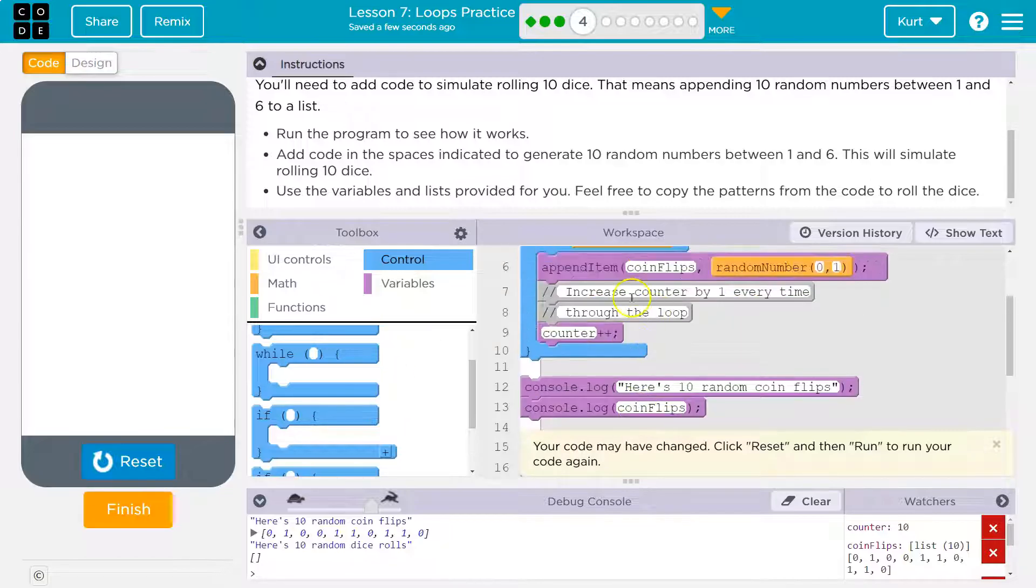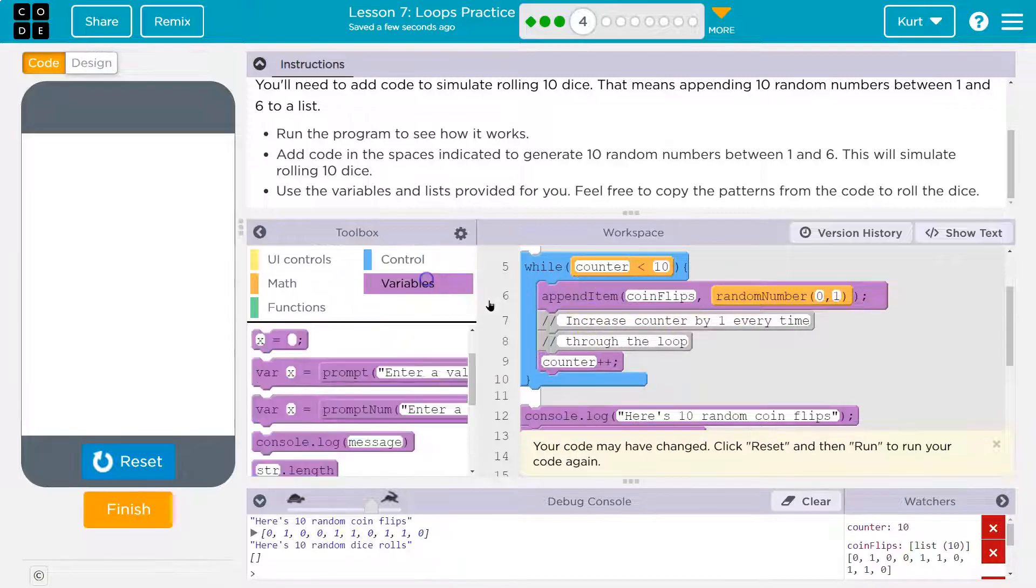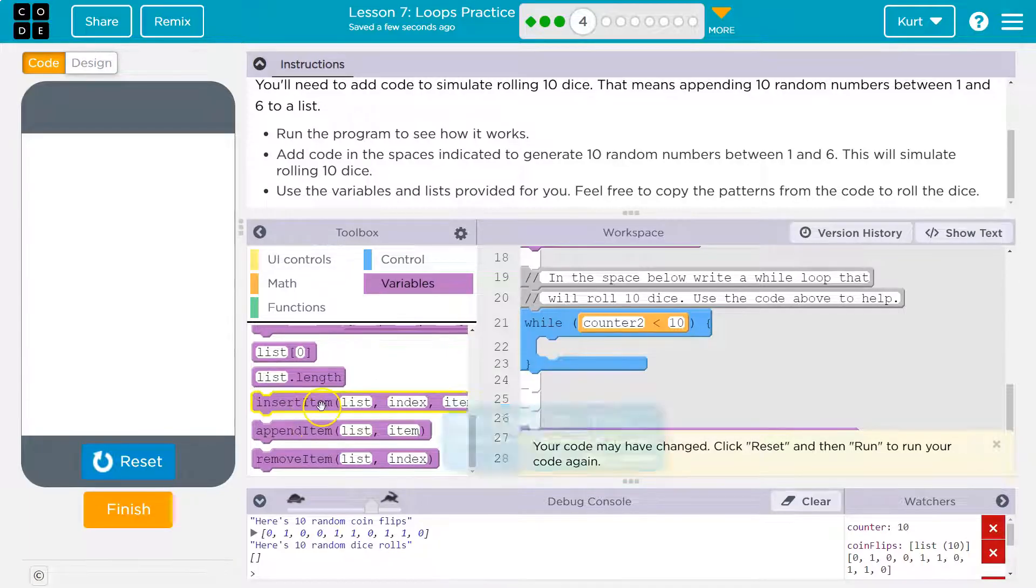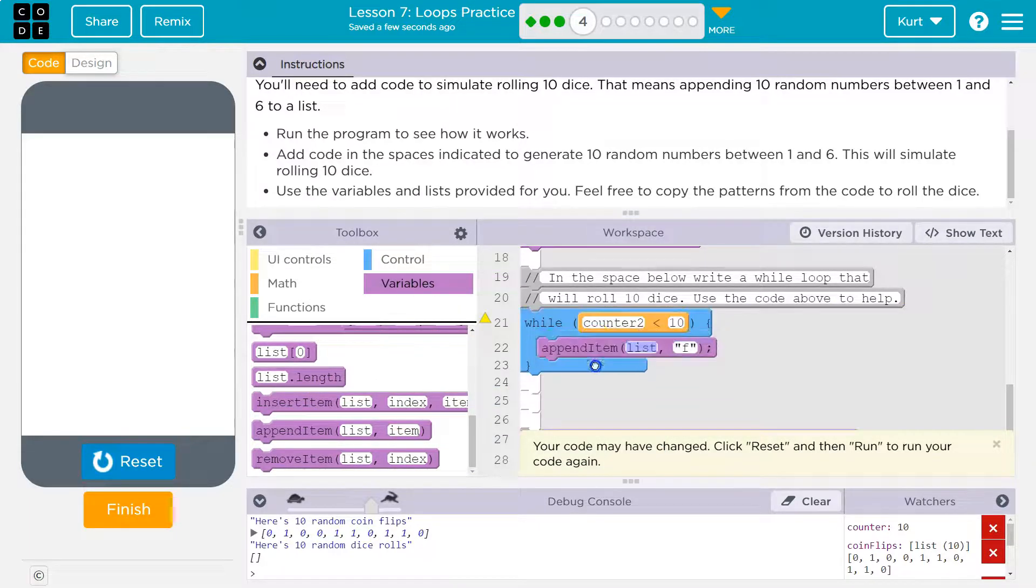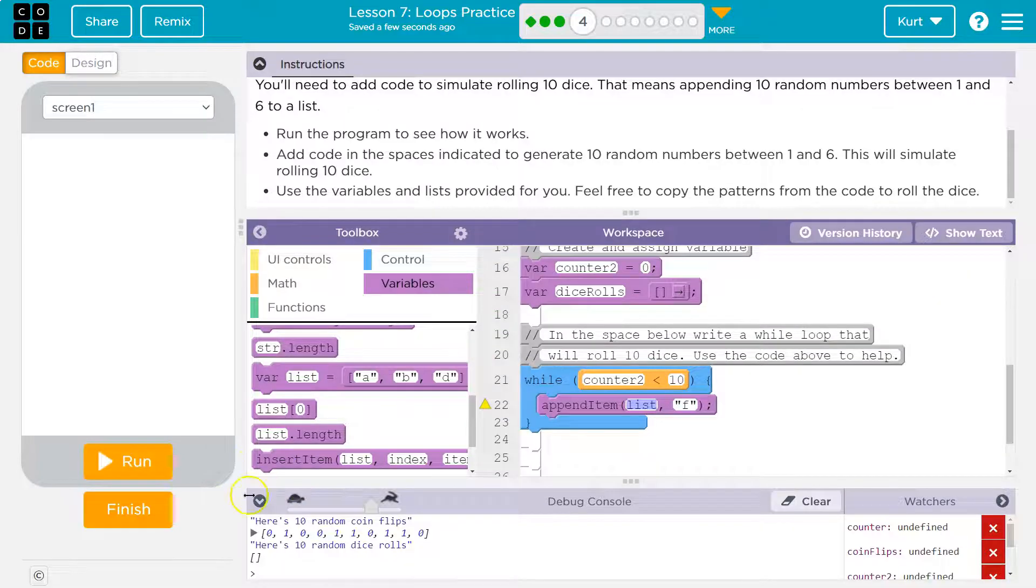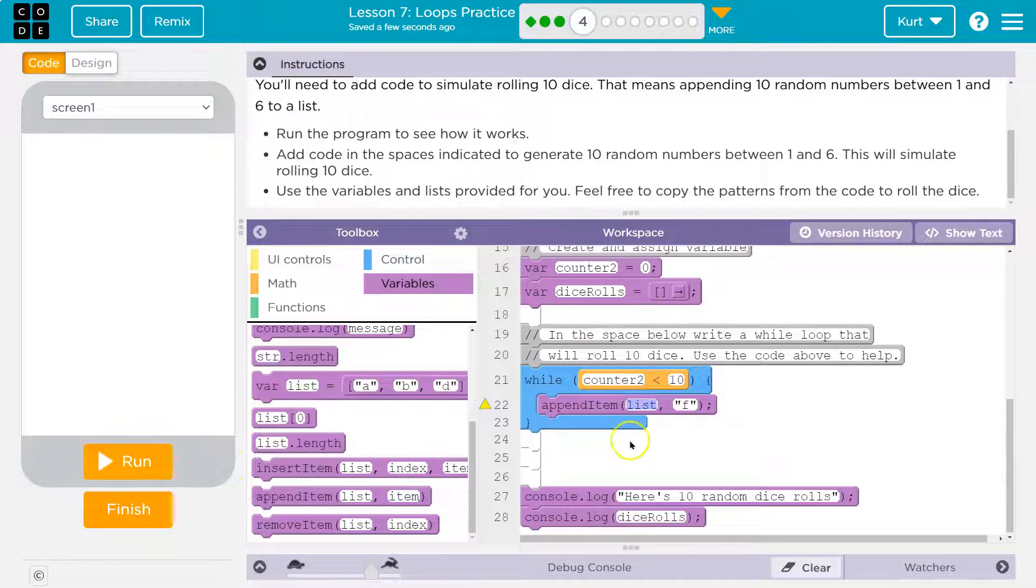So while it's doing this, how do we append just like this, right? Append item. So I'm going to go to variables. I'm going to look for append and that adds something to the end of a list. So append, whoops, I need that in my loop so it actually does it many times. The name of my list, I'll shrink that. It is dice rolls. So I'll have that word here.